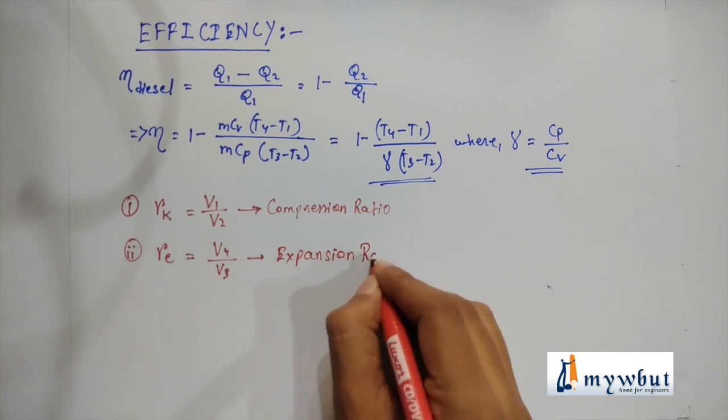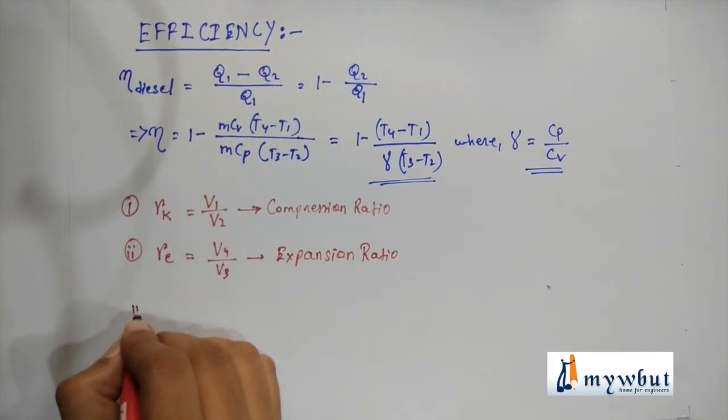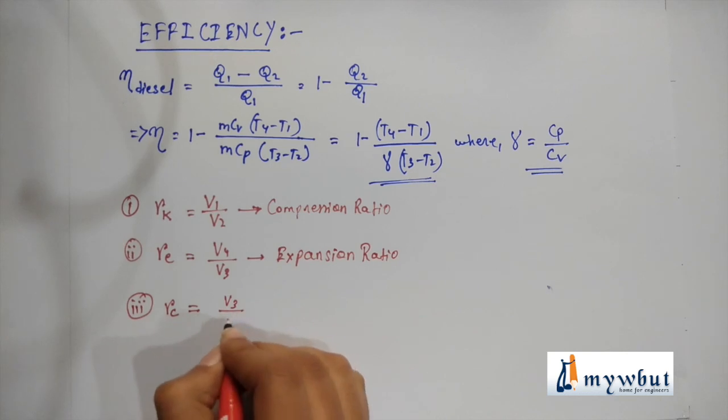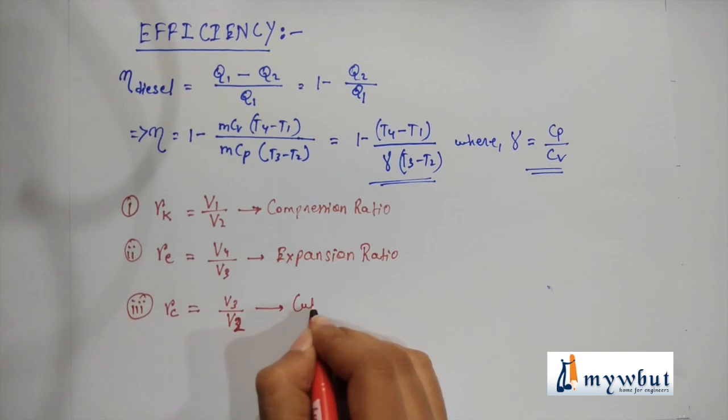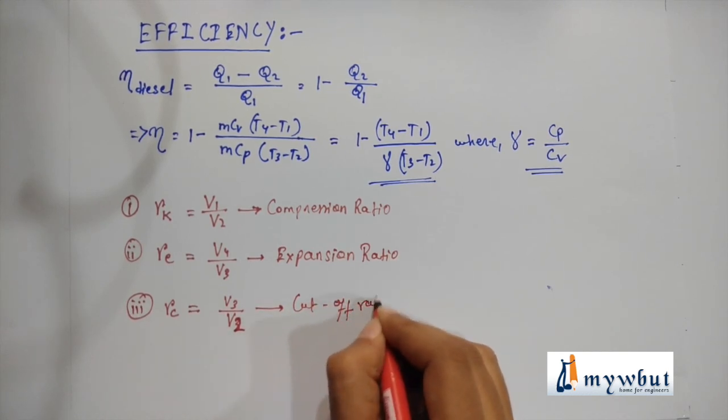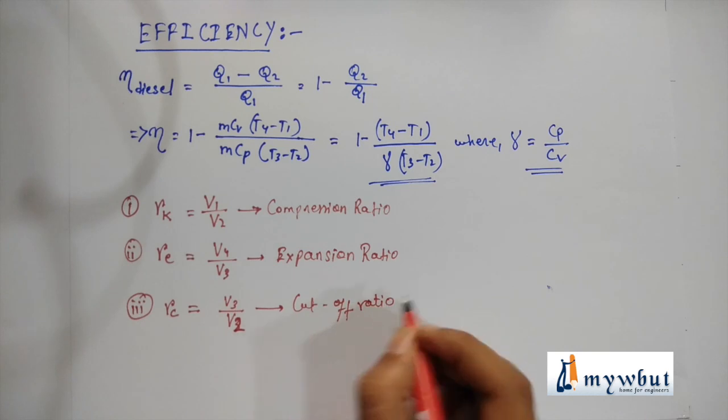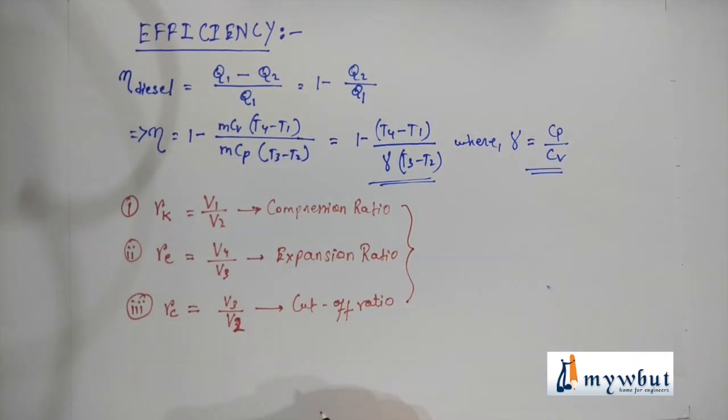Number 3 is RC, which is V3/V2, that is the cutoff ratio. These three terms are very important for further derivation of the efficiency for diesel cycle. From these three terms we can see that compression ratio is the product between expansion ratio and cutoff ratio.